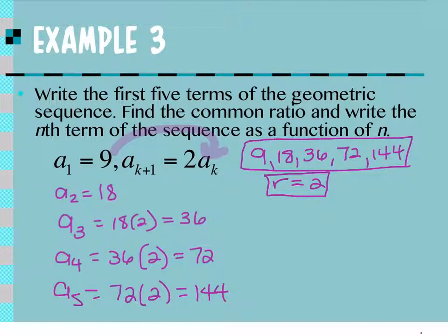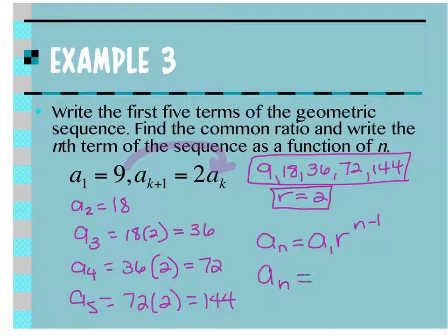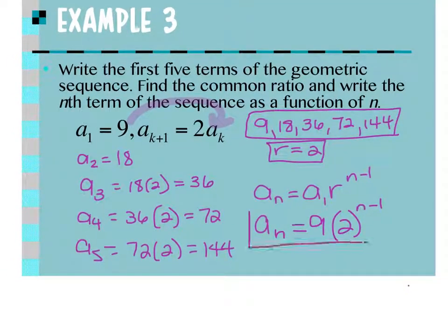And then it says write the nth term of a sequence as a function of n. So my equation is a sub n equals a sub 1 times r to the n minus 1. A sub n would equal a sub 1, which is 9, r, which is 2, to the n minus 1. And you're going to leave it like this. Do not multiply 9 and 2. That is wrong. 2 is the only one that gets that exponent. So you cannot make that 18n minus 1. Questions on that one?